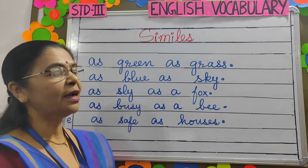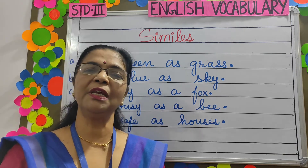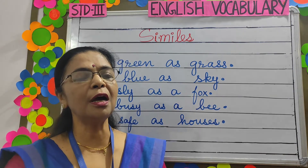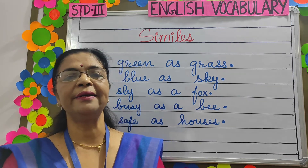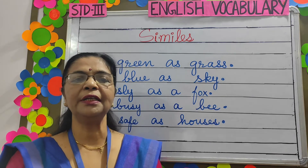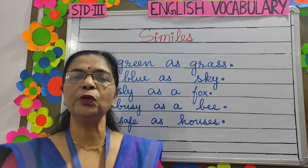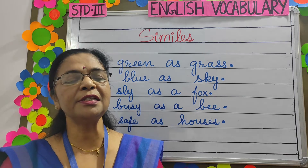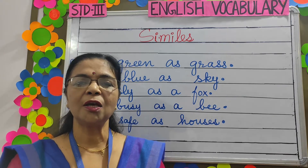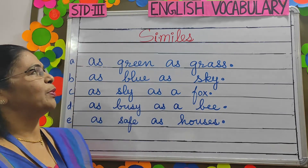Now let's learn about similes. What is a simile, children? A simile is a figure of speech that directly compares two different things. The simile is usually a phrase that begins with the word 'as' or 'like'. So let's see the examples.